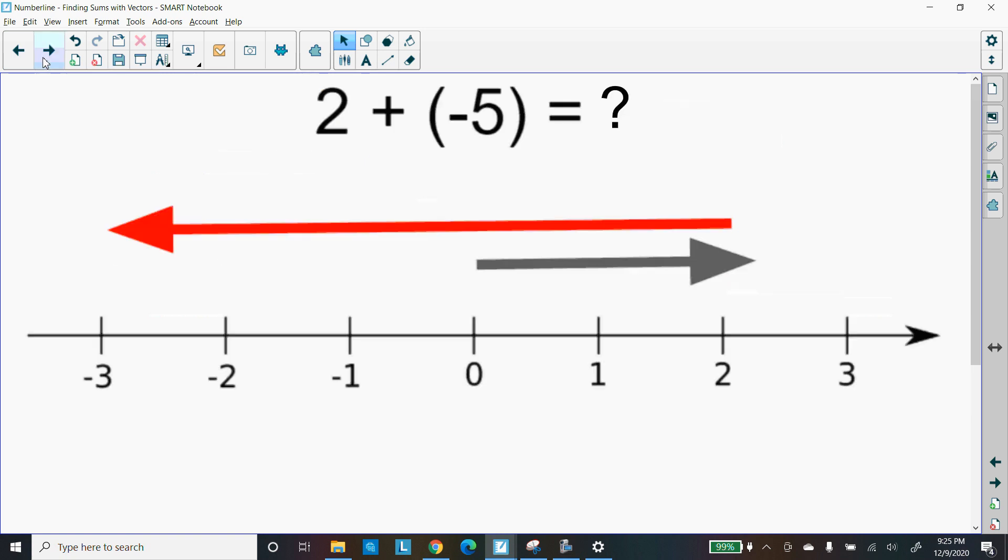All right, so here's our first question. We want to figure out what's the value of 2 plus negative 5. We want to find out what that's equal to, because we have two vectors here, but let's figure out how did they get these numbers here. So the first step we're going to do is we're going to start at the bottom vector.